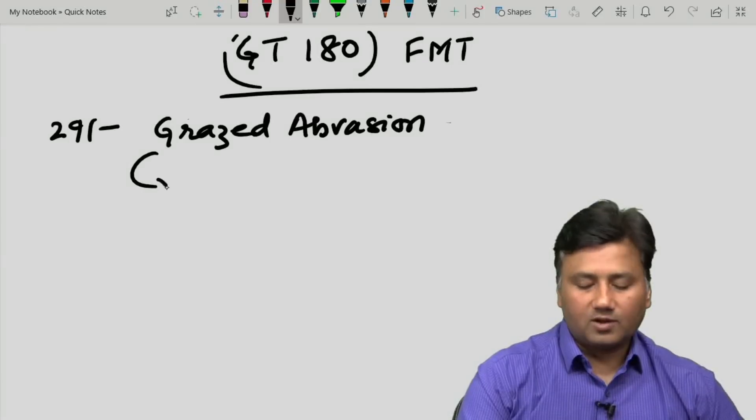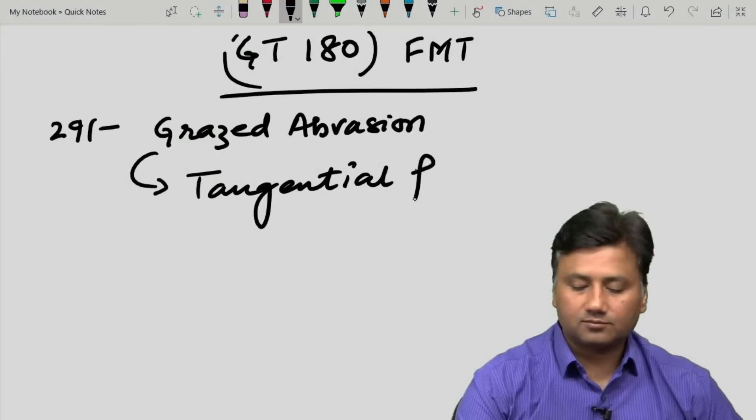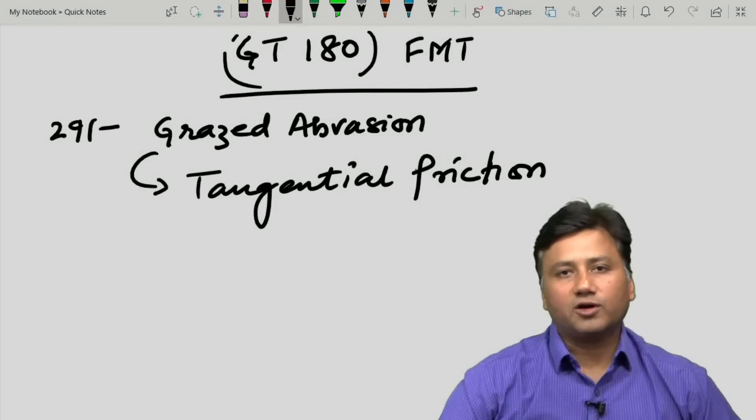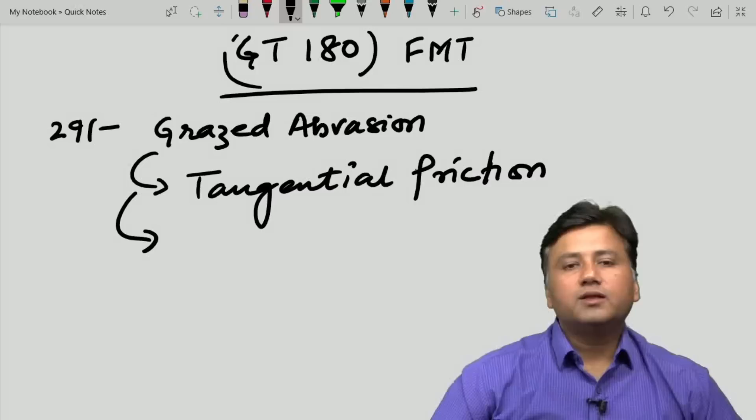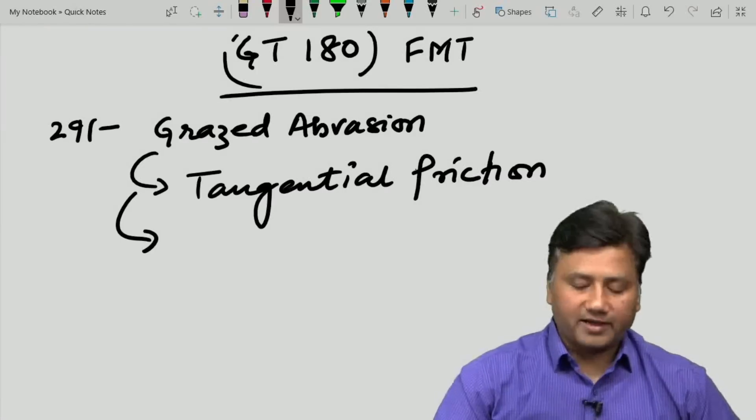They are product of tangential friction on the body by a rough surface, and these tangential frictions are very common in cases of road traffic accident.